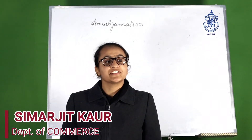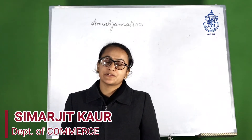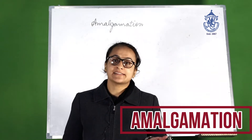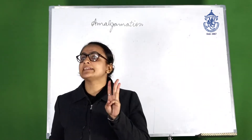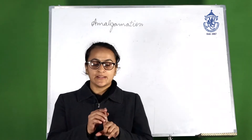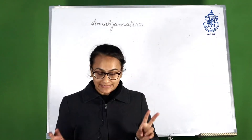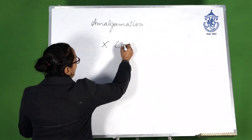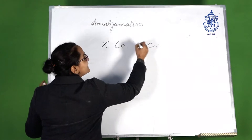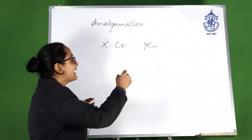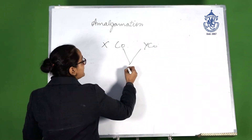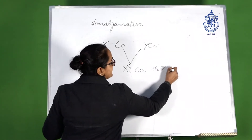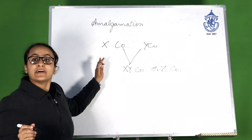Hello everyone, I am Simarcheet Kaur and today we will be discussing the topic of accounting for amalgamations and mergers. I would like to introduce three terms. First one is amalgamation — when two companies, say X company and Y company, both liquidate and together form XY company or Z company. This is the case of amalgamation.